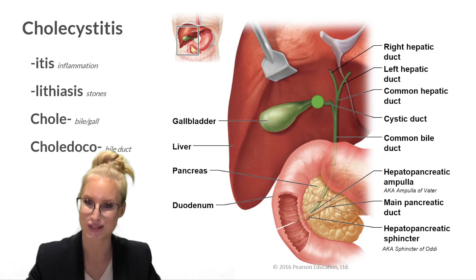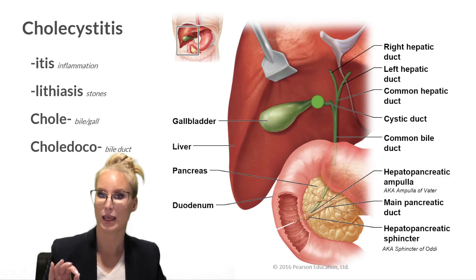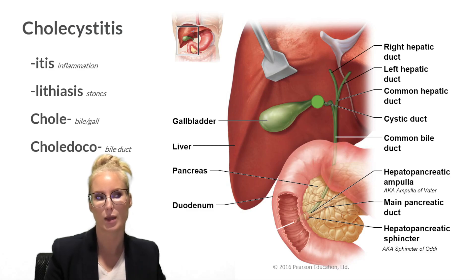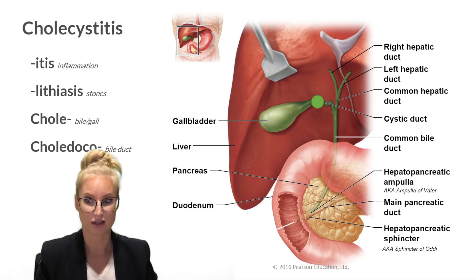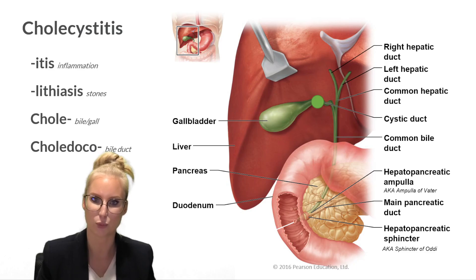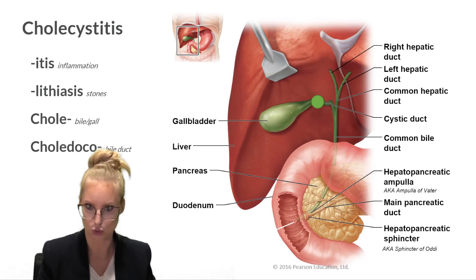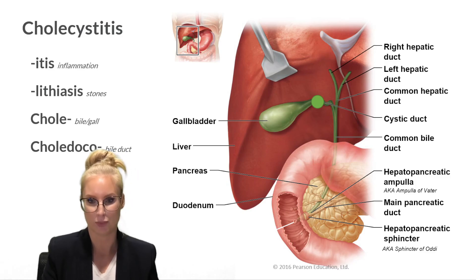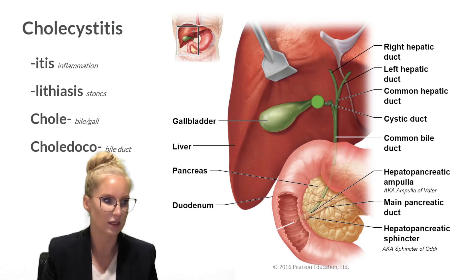Let's move on to cholecystitis. Breaking down the word: 'chole-' means gallbladder, 'cyst-' refers to the cystic duct, and '-itis' means inflammation — so cholecystitis means inflammation of the gallbladder and cystic duct. Whereas in biliary colic the gallstone transiently traps itself in the cystic duct opening, in cholecystitis the stone gets lodged and stays there, causing prolonged obstruction. The bile can't go anywhere, bacteria proliferate, pressure increases, leading to infection and inflammation.